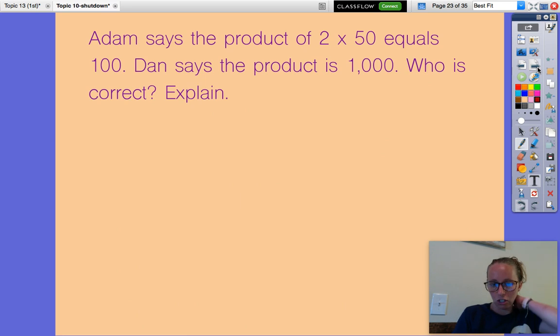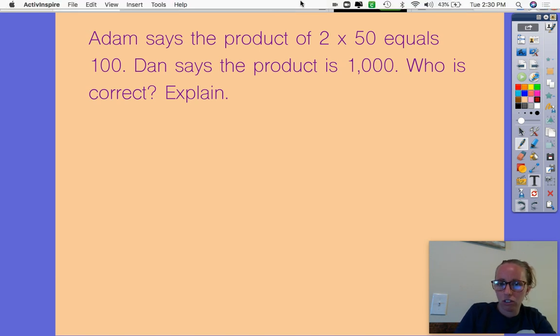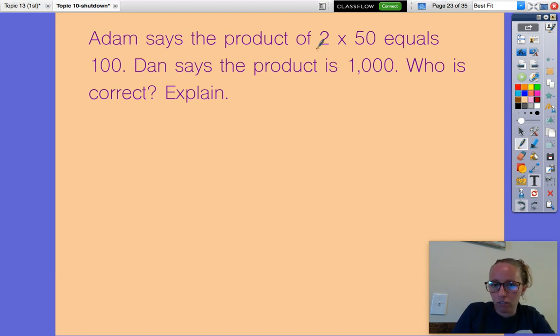One last problem. Adam says that the product of two times 50 equals 100. Dan says the product is 1,000. Who is correct? And explain. They're arguing over this equation, two times 50. Does it equal 100 or 1,000? The question is asking who is correct and explain.